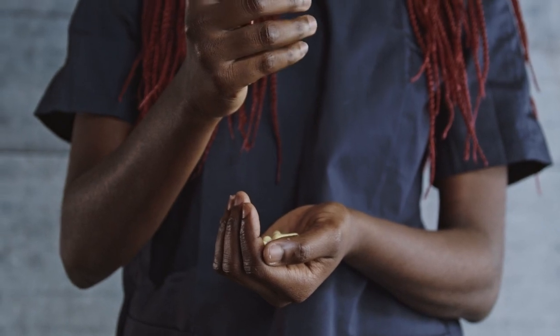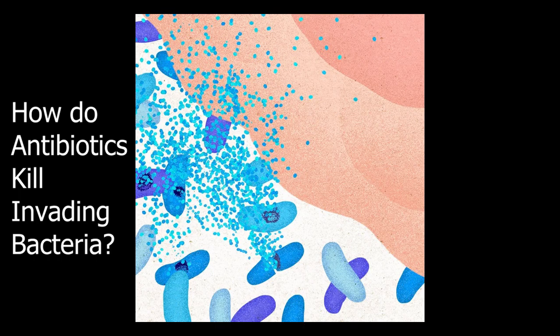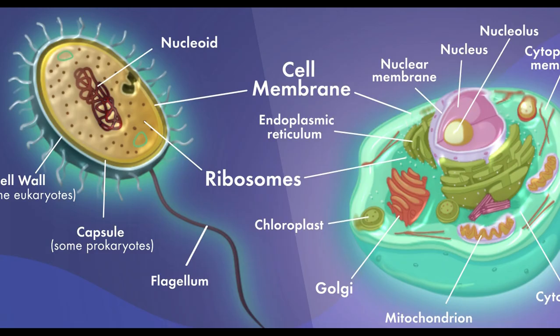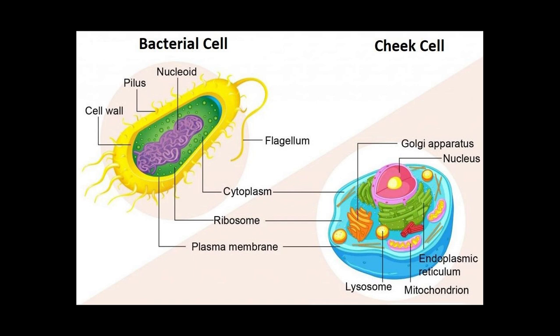So the question arises: how do antibiotics kill invading bacteria while leaving human cells alone? There are lots of similarities between bacteria and human cells, but there are many differences that also exist as well. Antibiotics work by affecting things that bacterial cells have but human cells don't. For example, human cells do not have cell walls, while many types of bacteria do.